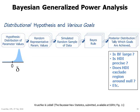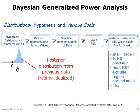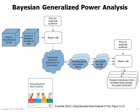Bayesian generalized power analysis involves a distributional hypothesis and various goals. From the distribution of uncertain effect sizes at the left, we randomly choose one, then simulate random data, then apply Bayesian inference, then check the posterior distribution for whether each of the goals is achieved, and repeat until sufficient stability of the power estimate is achieved. We can check a variety of goals such as: is the Bayes factor large? Is the highest density interval precise? Does the HDI exclude a region around the null value? Typically, the hypothetical distribution comes from the posterior distribution of previous data.